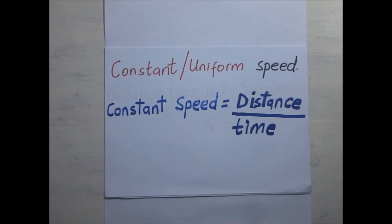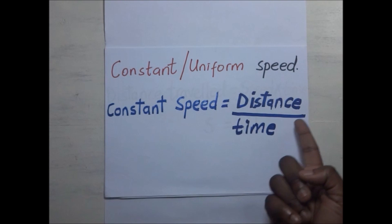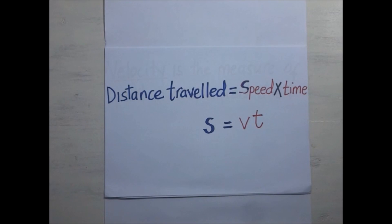The formula for constant or uniform speed is simply: speed equals distance divided by time. We get the formula that constant speed equals distance over time. If we multiply time on both sides to eliminate the fraction, it becomes: distance traveled equals speed times time. This is very important for motion in a straight line — commit it to memory.